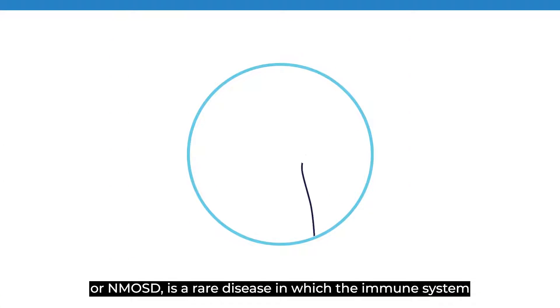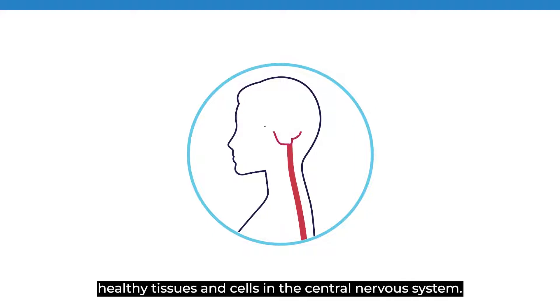Neuromyelitis Optica Spectrum Disorder, or NMOSD, is a rare disease in which the immune system is inappropriately activated to target healthy tissues and cells in the central nervous system.